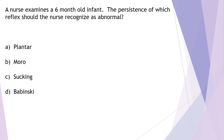Question three: the nurse is examining a six-month-old infant. Persistence of which reflex should the nurse recognize as abnormal? Options: A) plantar, B) Moro, C) sucking, or D) Babinski. The plantar reflex disappears at eight to ten months — still present at six months is normal. Sucking disappears around ten months to a year — still present at six months is fine. Babinski disappears around two years. The Moro (startle) reflex disappears around three months, so if it's still present at six months, that should be recognized as abnormal. Answer is B.